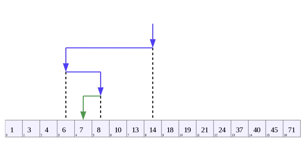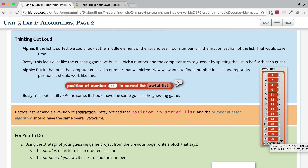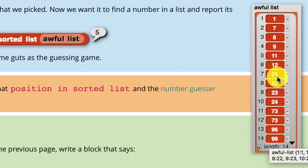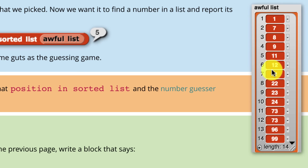Some of you implemented this in the last part of the lab on page 1 when you created your number guesser. A more efficient way to find a number in a sorted list is to guess the value at the halfway point of the entire list. If it's sorted and you're too high or too low, you can cut out half of the list and don't need to search through those items. For example, in the sorted list, if I look at position 7 first and the number I'm looking for is 73, and position 7 holds 21 — that's too low — so I don't have to look at positions 6, 5, 4, 3, 2, or 1. Then I keep going half and half until I find the correct answer.